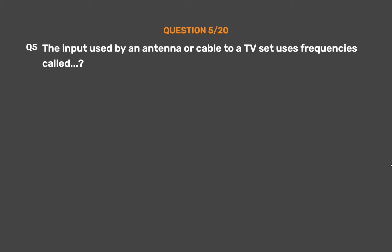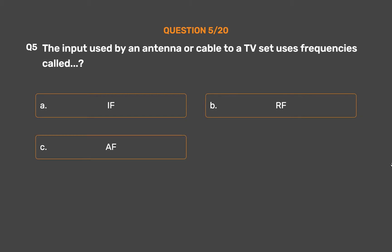Question number 5. The input used by an antenna or cable to a TV set uses frequencies called. Option A: IF. Option B: RF. Option C: AF. Option D: SAP.